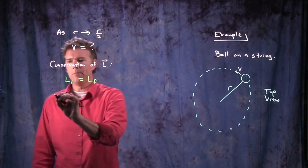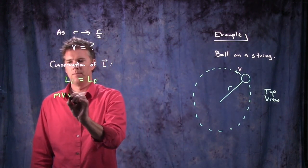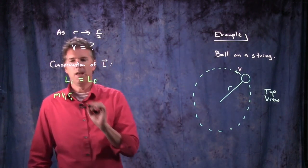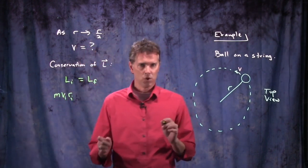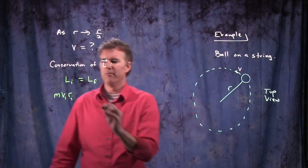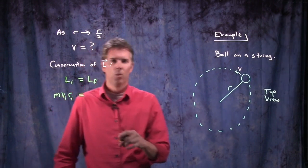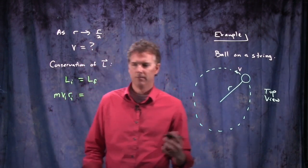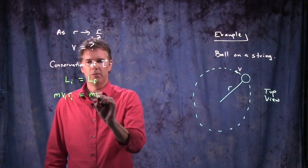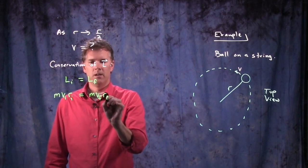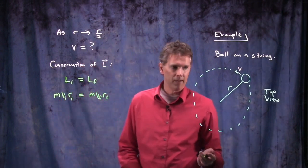It is MVR. And so if it's initial, I need to put subscripts on there. MV initial, R initial. What about the final? Same mass, so we don't have to worry about that.